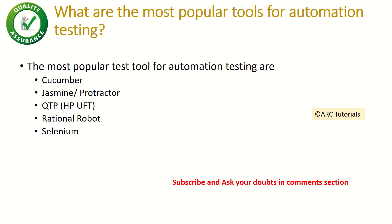The next question is: what are some of the most popular tools for automation testing? Some of the most popular testing tools are Cucumber, Jasmine, QTP, Rational Robot, and Selenium. You can talk about your personal experience with any of these, which should help you cement your interview performance.